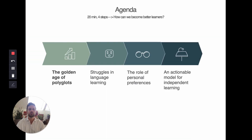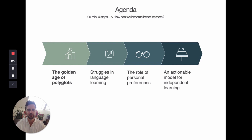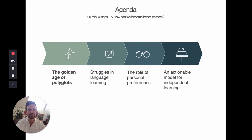Today I'd like to talk about how we can become better learners. The presentation is about 20 minutes and divided into four parts: first, an overview of the online language learning industry today; second, data we've collected about what language learners typically struggle with; third, how personal preferences play a role in language learning; and finally, the topic of a unified model for language learning.